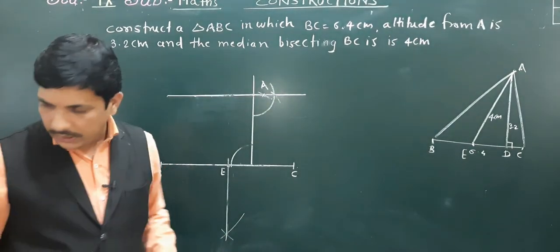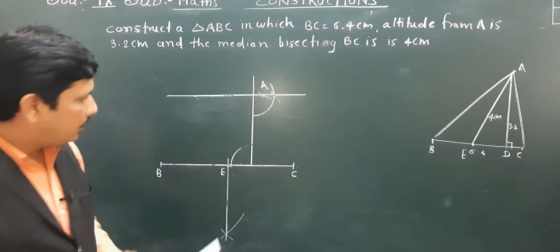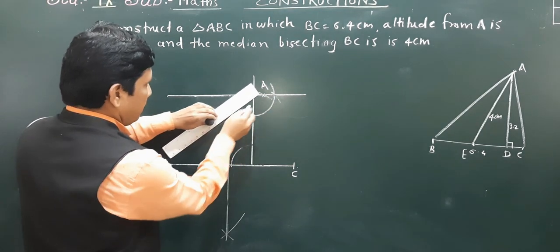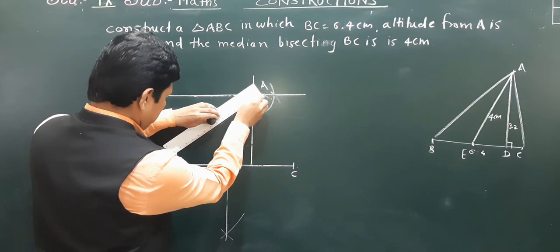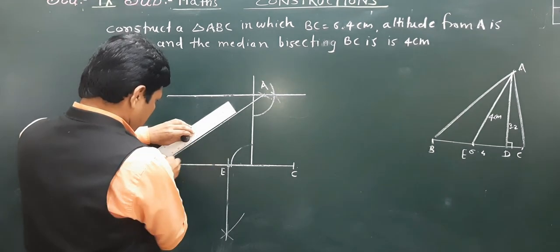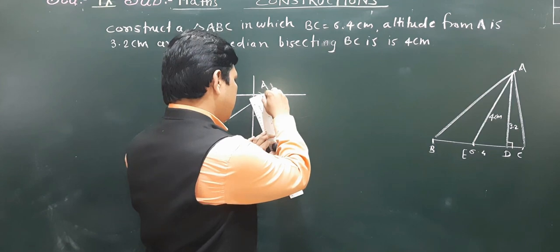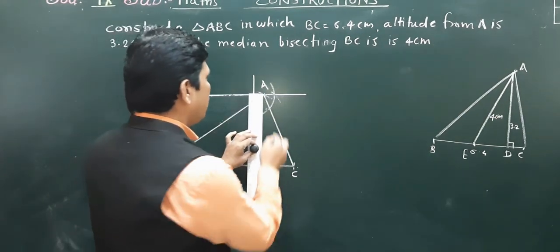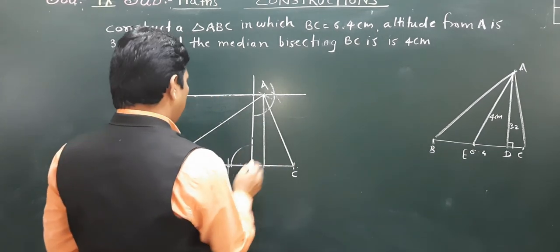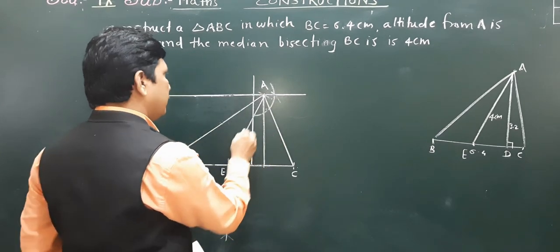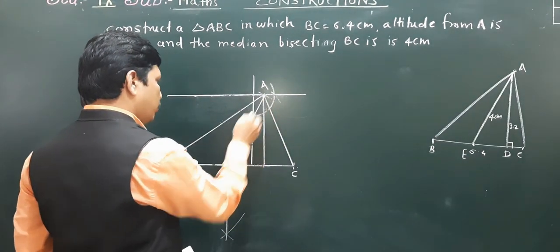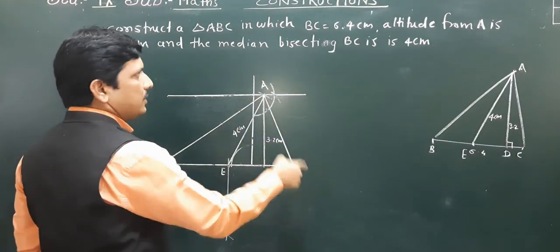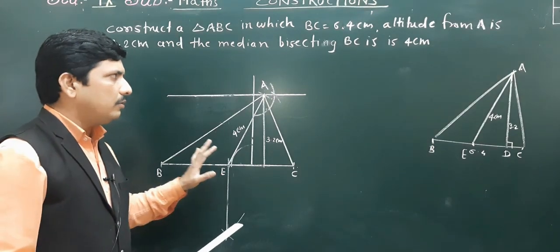Now we join A to B and A to C. We can also show that the distance from the foot of the altitude to the base is 3.2 centimeters, and AE is 4 centimeters. Our required triangle is ABC. This is our construction.